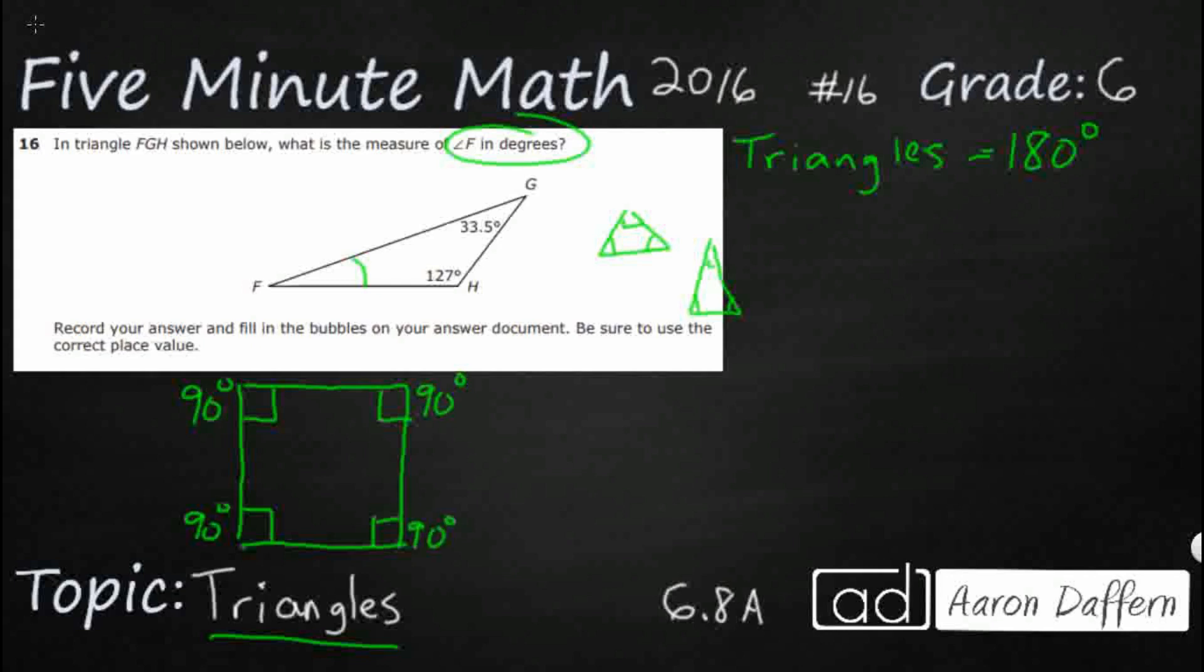So guess what? Every single square, or actually it's a quadrilateral, if you want to use a larger term there, equals 360.